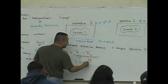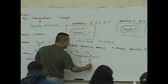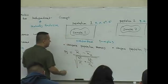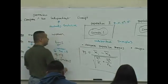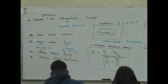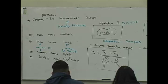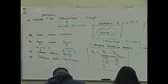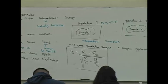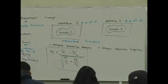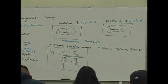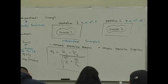Plus the sample variance for the second group divided by the sample size of the second group. That's your test statistic associated with the hypothesis test comparing two means with independent samples.